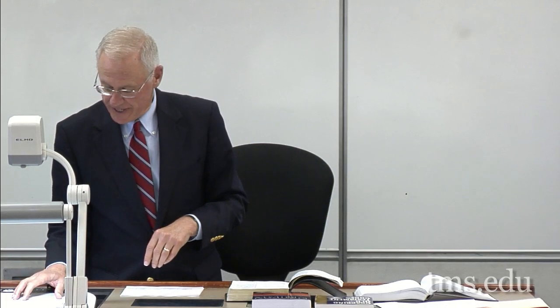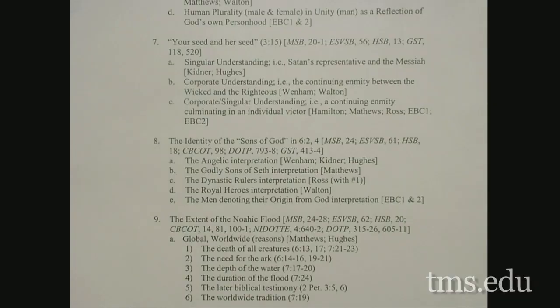What is the identity of the sons of God in chapter 6, verses 2 to 4? With Dr. MacArthur, I believe that they are angelic beings. I think that's clear from the way it's picked up in the New Testament. Is that clear in Genesis 6 itself? My answer would be no.